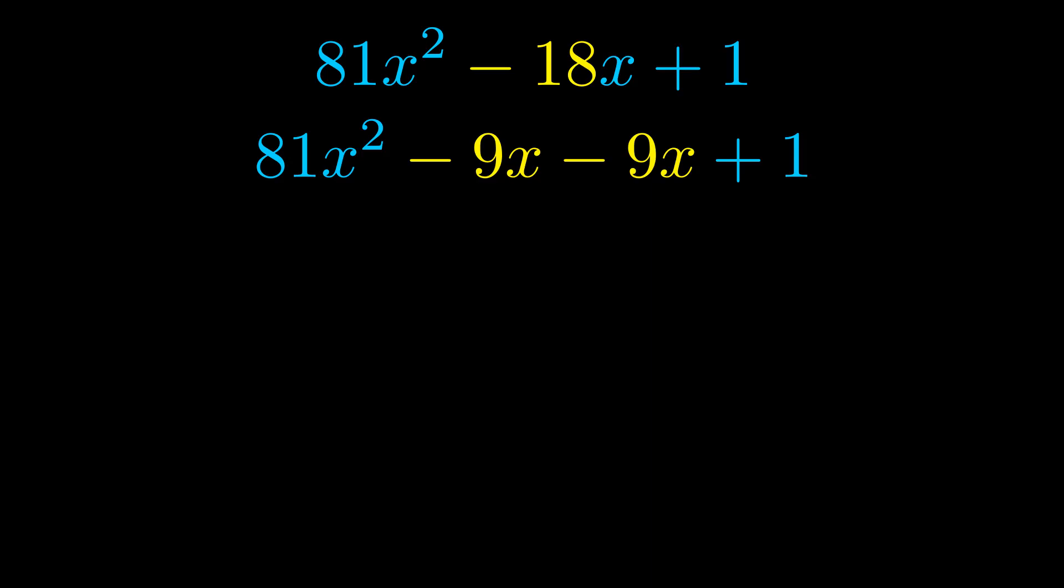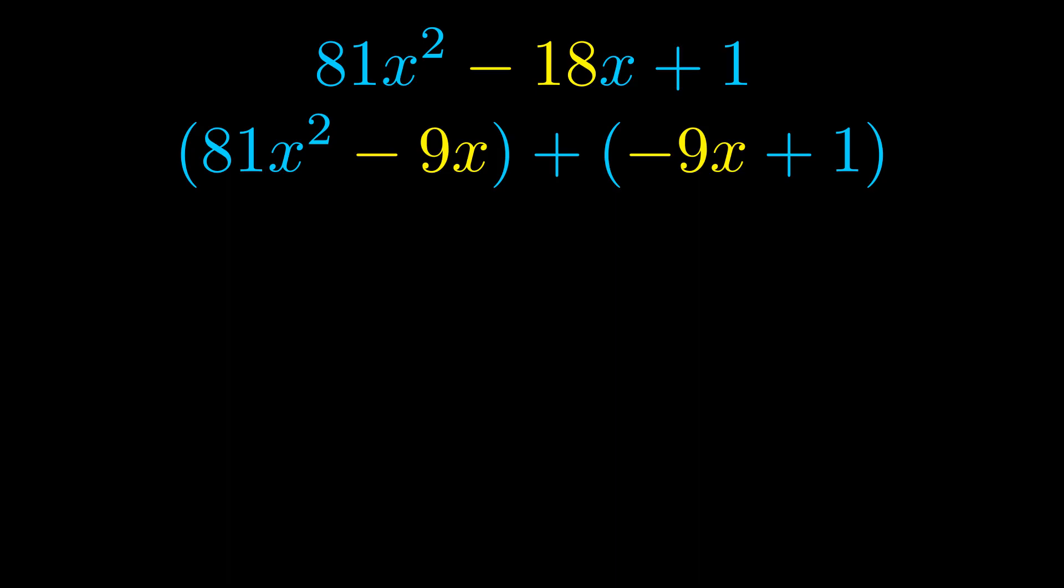Once we've done this we go ahead and we put parentheses around the first term and the last term and we do that so that we can take the greatest common factor out of both terms. We can see the greatest common factor is now outside in green.